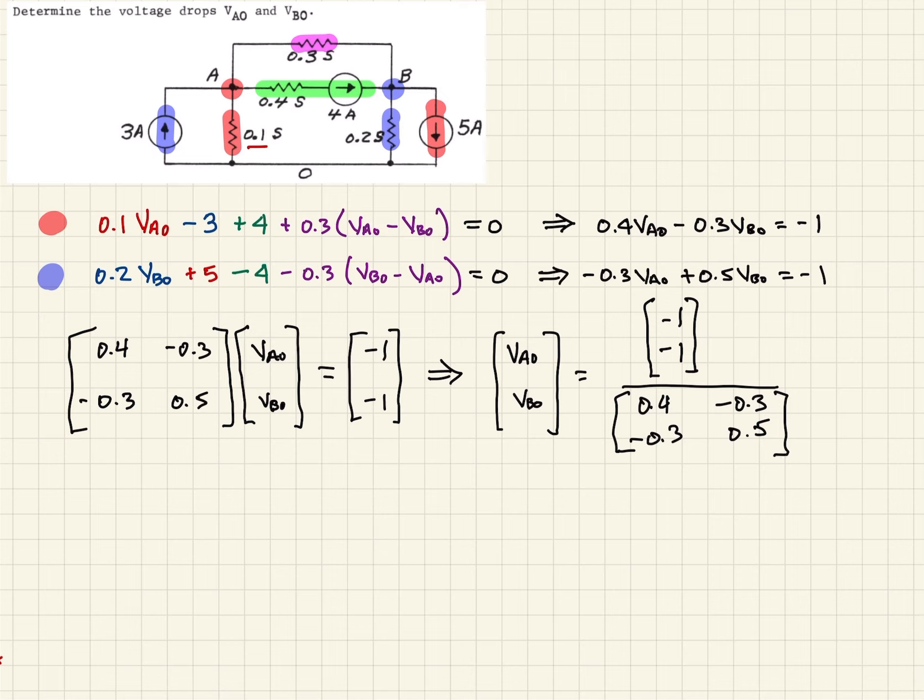So if you were to plug that all into the calculator and ask it to evaluate it, what you should come up with then is VA0 is going to be equal to minus 7.27, and VB0 is going to be minus 6.36. And I believe these are repeating. So here are the voltages at those nodes - VA0 or the voltage at A relative to ground, VB0 or the voltage at node B relative to ground.